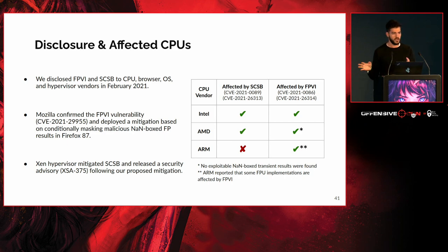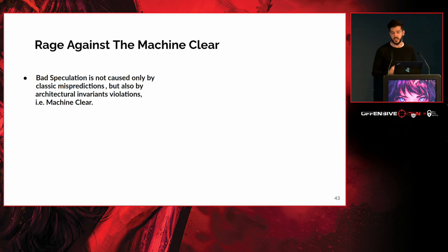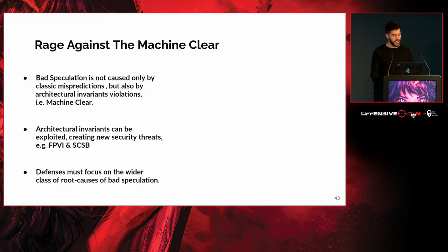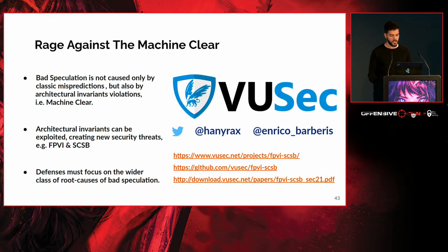To conclude: bad speculation is not caused only by classic branch mispredictions, but also by architectural invariant violations — the entire class of machine clears we presented today. These invariants can be exploited, creating new security threats like floating point value injection and speculative code store bypass. We think defenses moving forward must focus on the wider meaning of bad speculation, and not only try to prevent an attacker from mistraining a branch predictor. You can find our paper, the exploit code, and the reverse engineering code on our links. Thanks for your attention.